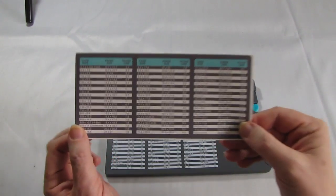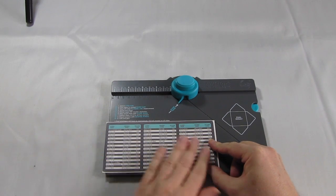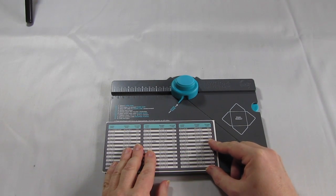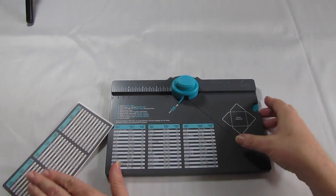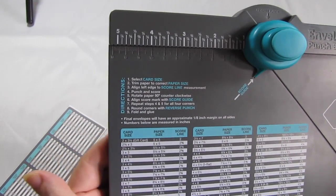Now if you're going to work in metric you get this handy sticker that you can just peel off and stick on the front of the board and you've now got a complete metric envelope punch board. With the instructions right on the front of the board you're never going to forget how to use it.